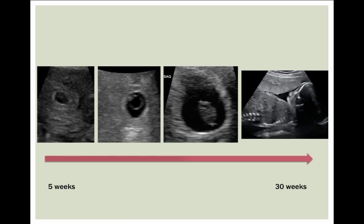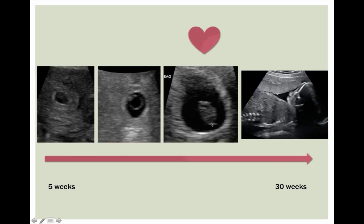Don't forget the progression: small sac, as the sac gets bigger the findings within it become more complex. Sac is bigger, a little simple yolk sac; a bigger sac, we see fetal pole; and don't forget by this point we should be seeing a heart. Thank you.